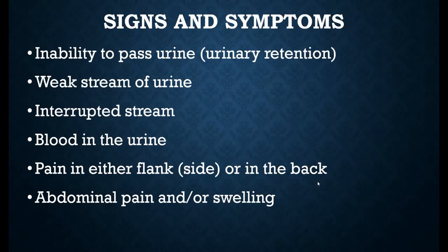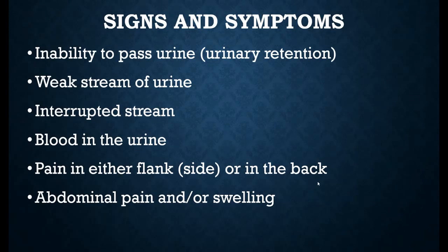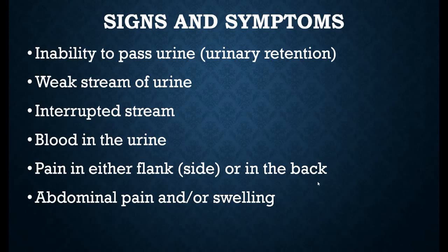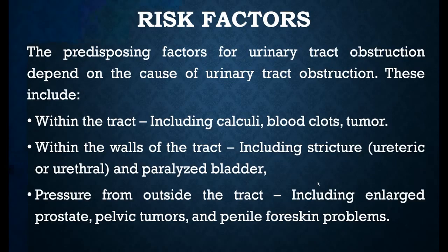Signs and symptoms: a person may have inability to pass urine due to obstruction, which you studied in the previous lecture as renal calculi. There may be a weak stream of urine — the person feels the bladder is full but urine flow is very light. There may be interrupted stream during micturition, stopping at intervals. Hematuria, that is blood in the urine, or pain in the abdominal area or on the sides of the back may also occur.